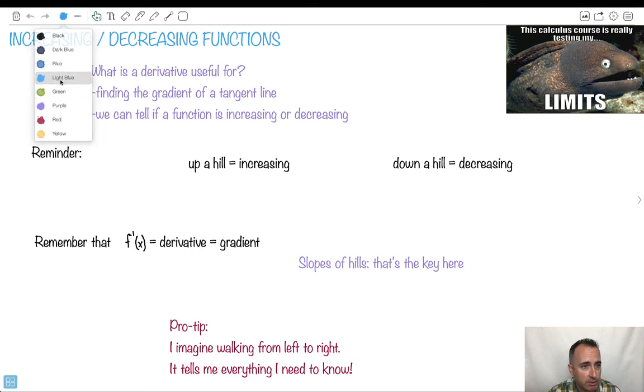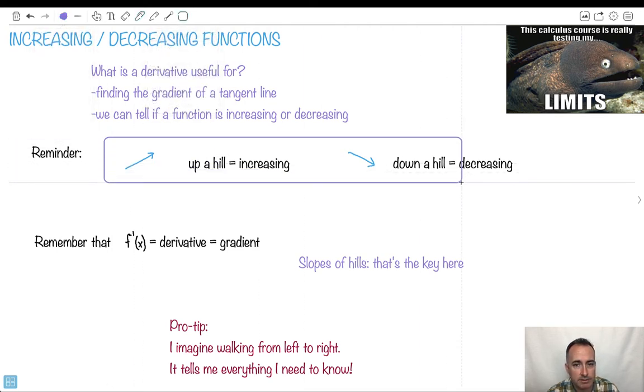So let's just give you a quick reminder. What do I mean by going up a hill? I mean, as you walk from left to right, if you've got a graph, as you walk from left to right, if you're going up a hill, we say it's increasing. If something is down a hill, let's say it's going like this right here, we say it's decreasing. So this is the key idea here. This is really it. This is what you need.